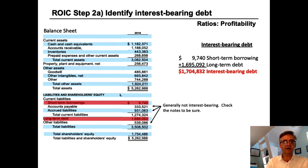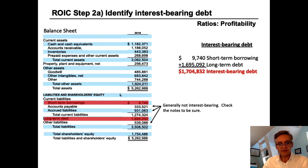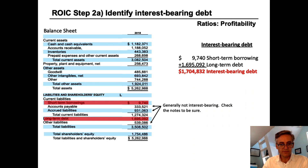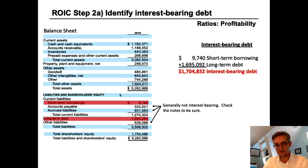Now we move on to finding the denominator. To find invested capital, we need to find interest-bearing debt. Looking at Hasbro's balance sheet, we look for items that are interest-bearing. In current liabilities, they have short-term borrowings, and in long-term liabilities, they have long-term debt — both clearly carry interest. Other items such as accounts payable, accrued liabilities, and other liabilities are generally not interest-bearing, though we'd want to check the notes to be sure. Adding the short-term borrowings and long-term debt together gives us $1.704 billion in interest-bearing debt.